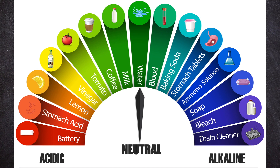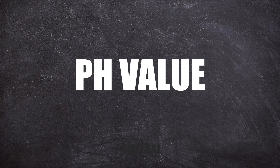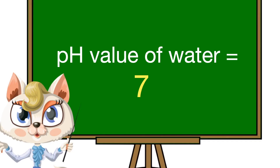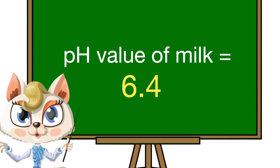Now I will discuss pH values. The pH value of water is 7 — this is very important for competitive exams, as there is usually a direct question on it. The pH value of milk is 6.4.